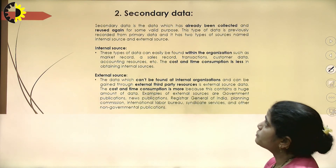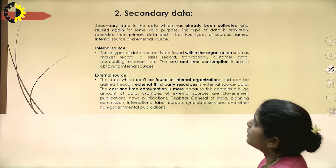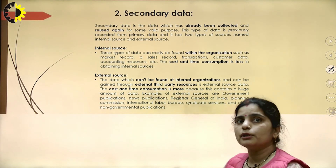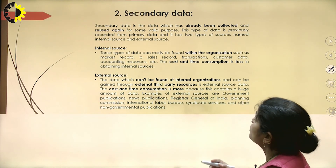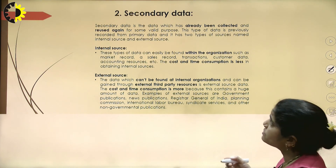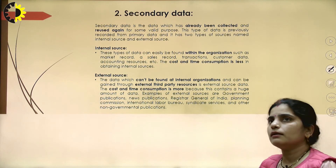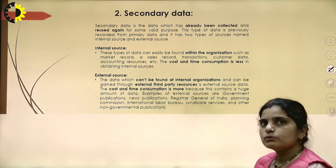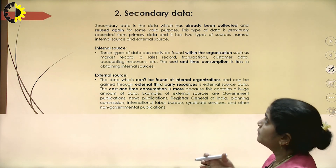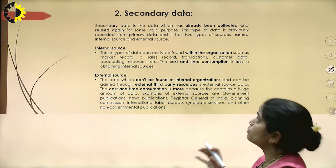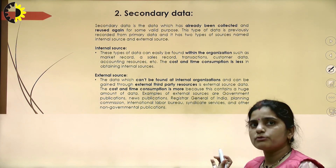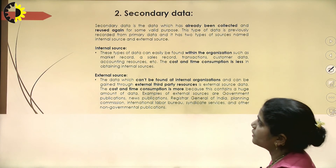The second type of data source is secondary data. Secondary data is data which has already been collected and can be reused again for some valid purpose. It is previously recorded from primary data and has two types of sources: the first one is the internal source and the second one is the external source.